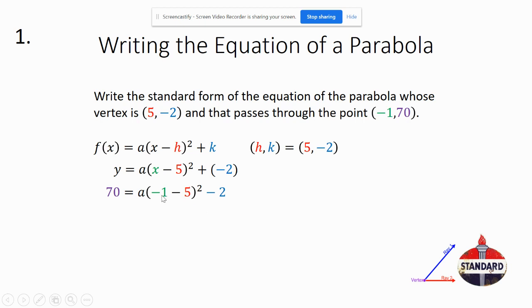But first off, we'll follow order of operations and do the parentheses. Negative 1 minus 5 is negative 6. Then we'll do our exponent here, which is negative 6 times negative 6, which is positive 36.